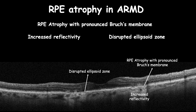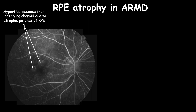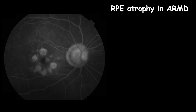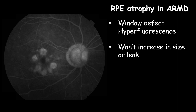Fluorescein angiogram shows hyperfluorescence from the underlying choroid due to atrophic patches of RPE, which appears in early phases, then increases slowly in mid-phases, forming a window defect along with hyperfluorescence from the choroid. The late phase shows no leakage or changes in window defect boundaries, and the hyperfluorescence fades away.